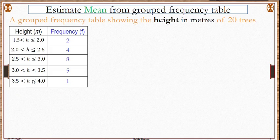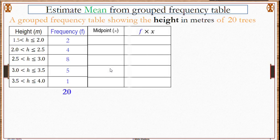To work out the midpoints we need to add the two values and divide by two. So we need our midpoints before we make our f times x.